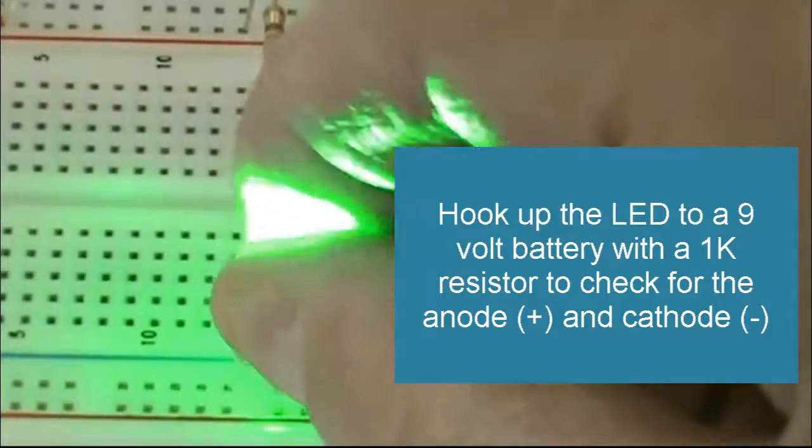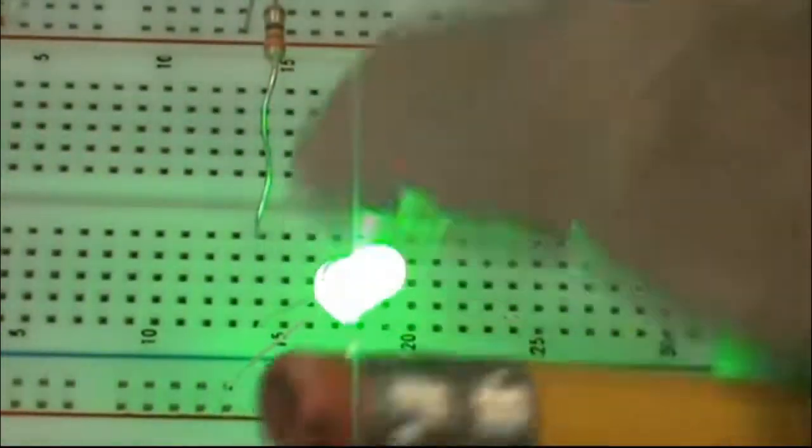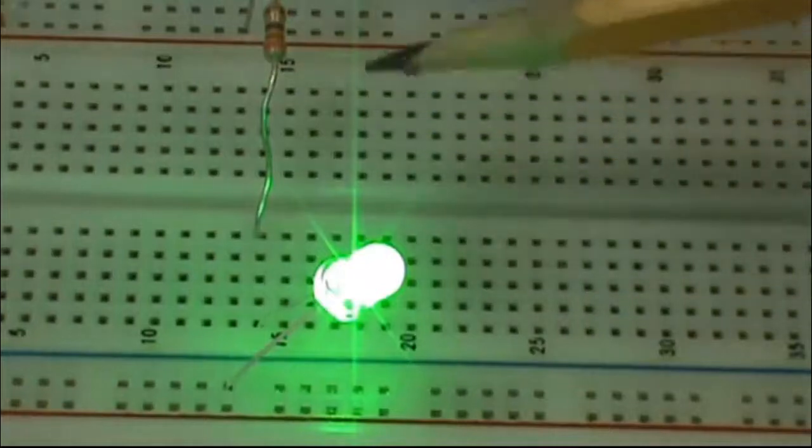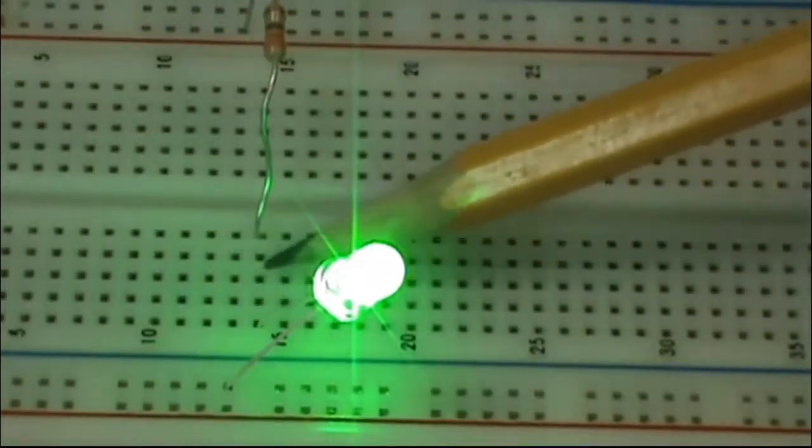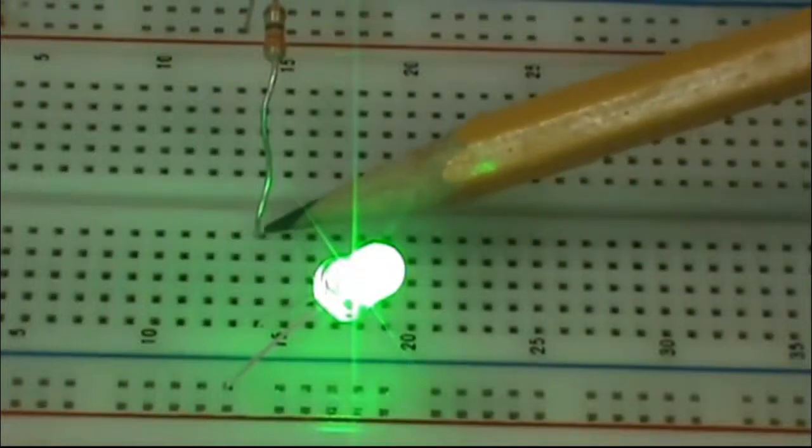Notice what I've done. I've hooked the, I'm going to turn it sideways so it doesn't blind the camera. I've hooked the other terminal of the LED right down here in line with the resistor here.